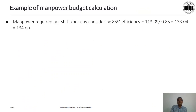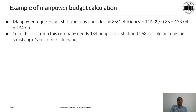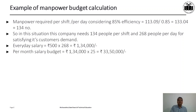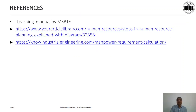Manpower required per shift per day considering 85% efficiency = 113.09 ÷ 0.85 = 133.04, which rounds up to 134 numbers. So in this situation the company needs 134 people per shift and 268 people per day for satisfying its customer demand. Every day salary will be Rs. 500 × 268 = Rs. 1,34,000. Per month salary budget will be Rs. 1,34,000 × 25 = Rs. 33,50,000. By this example you can understand how manpower budgeting is done in a particular section by a supervisor and his immediate boss.